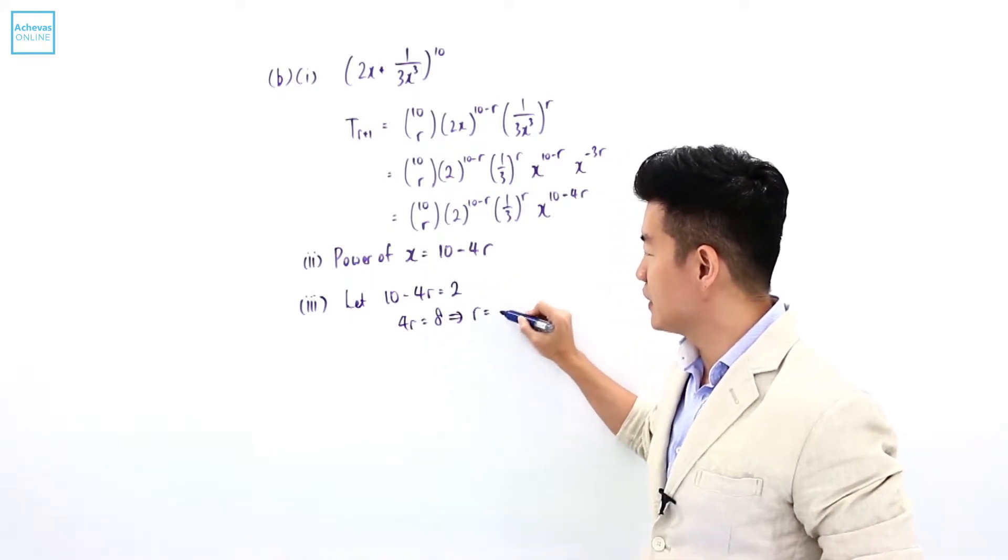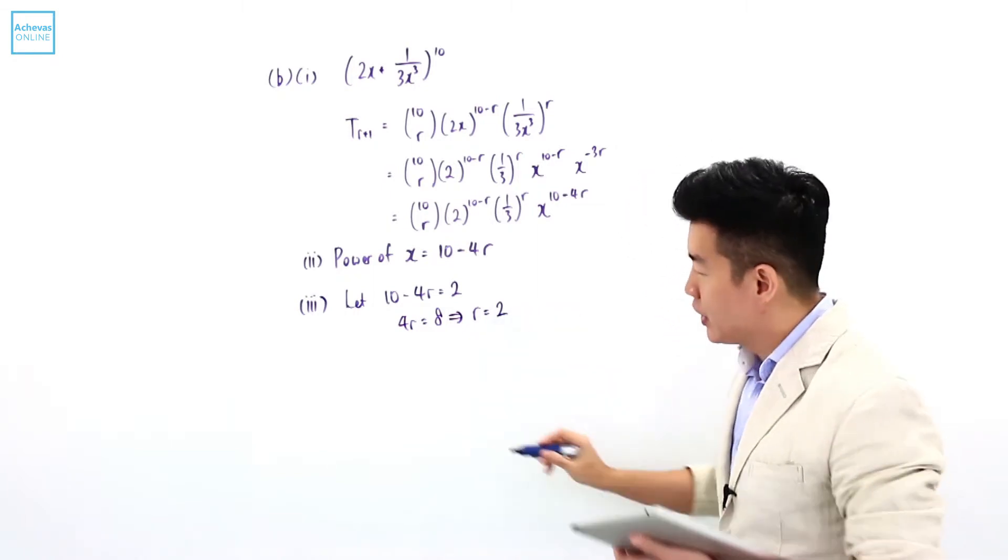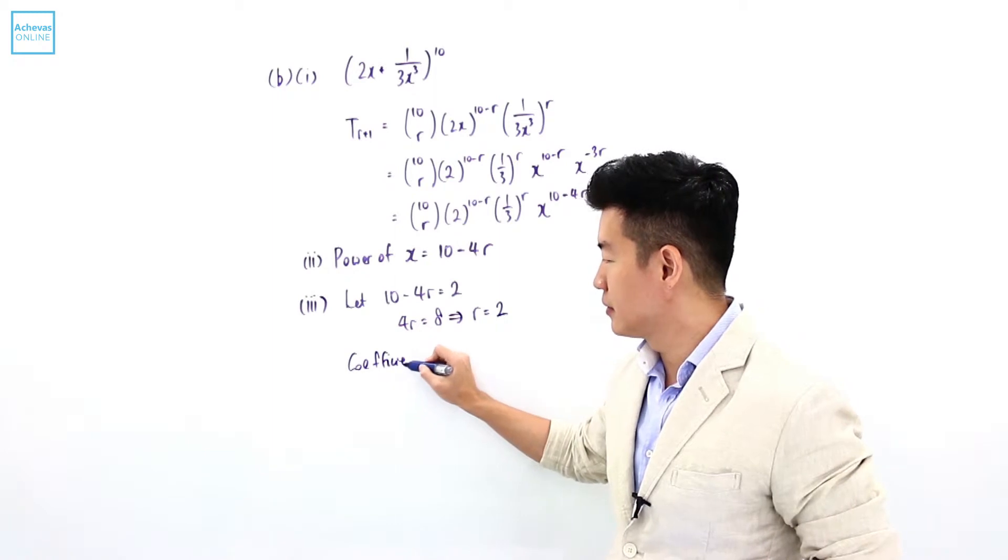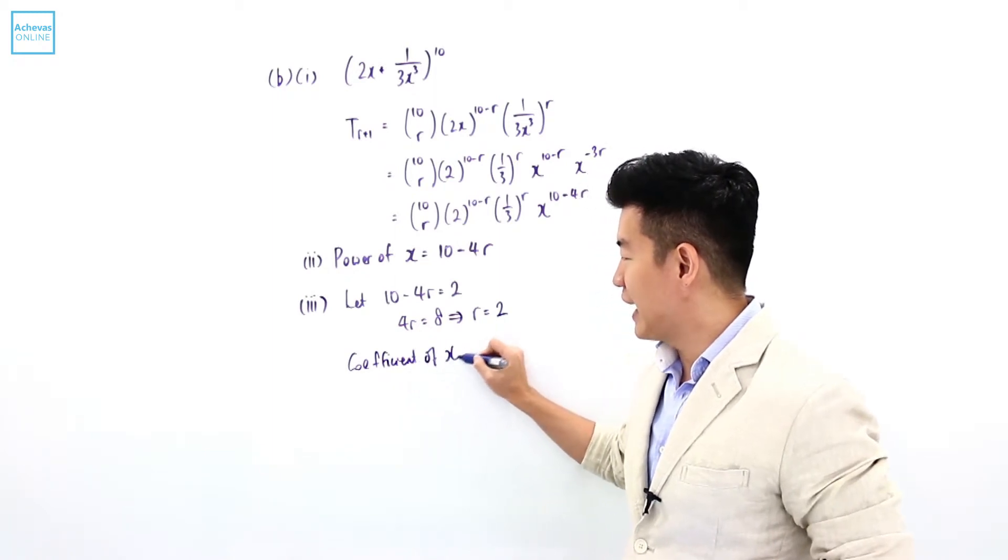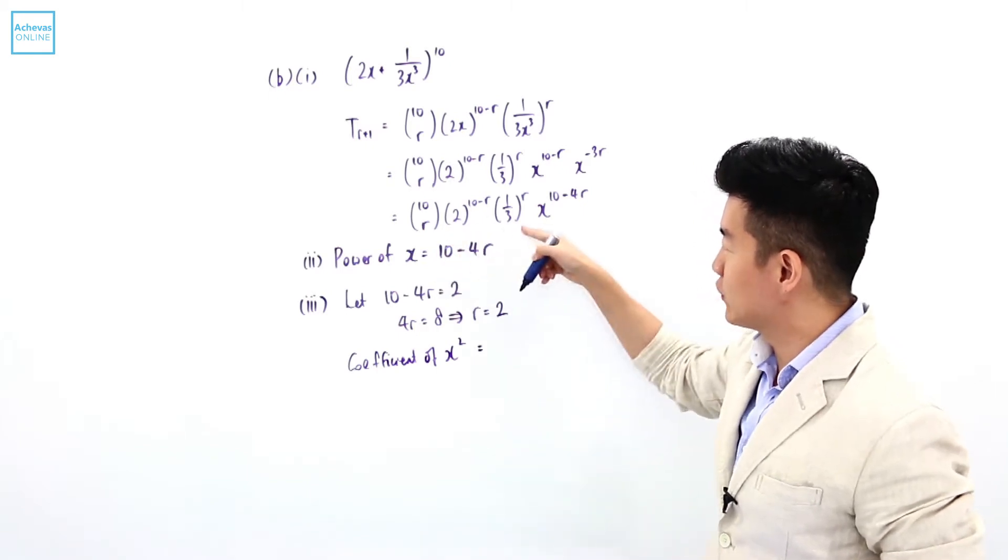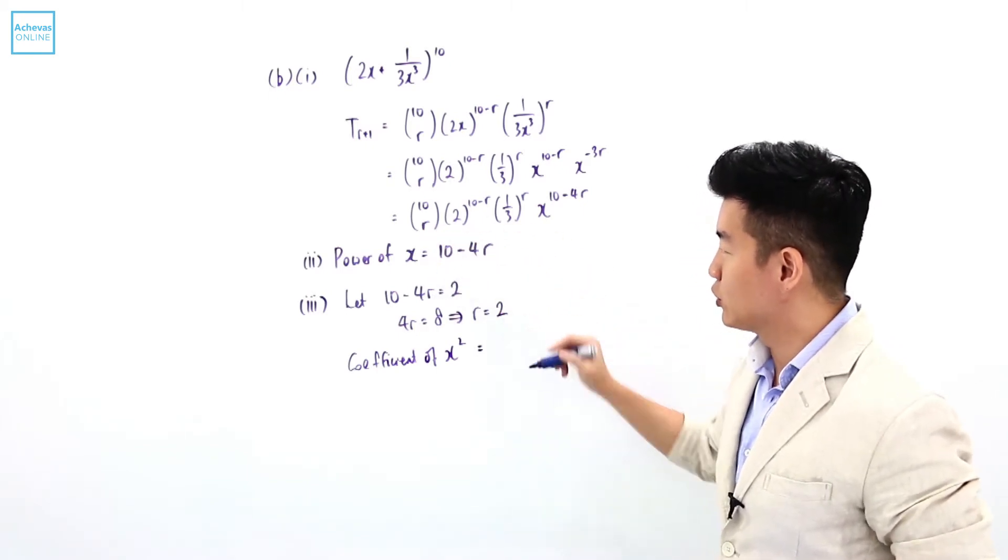This tells me that r is just simply equal to 2, which means that the coefficient of the x square term is going to be just this over here, when r is equal to 2.